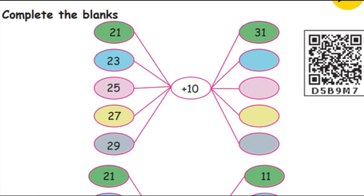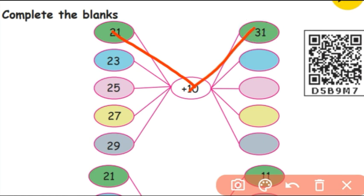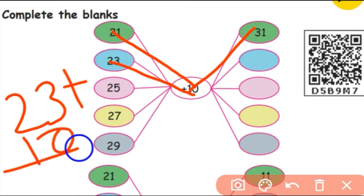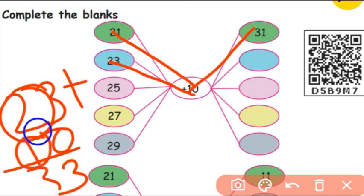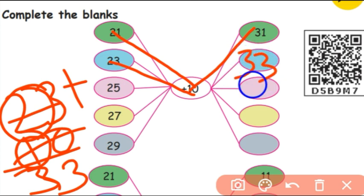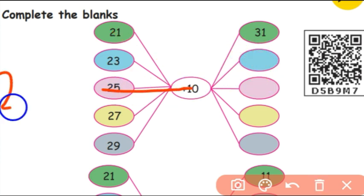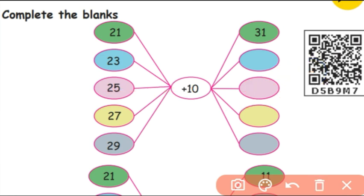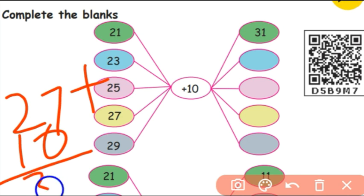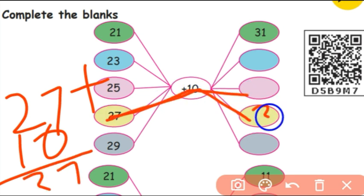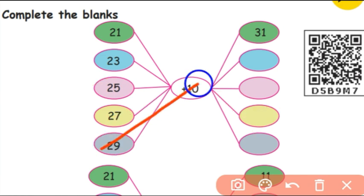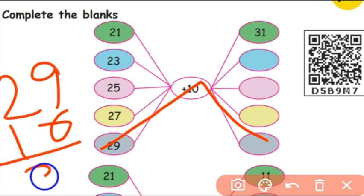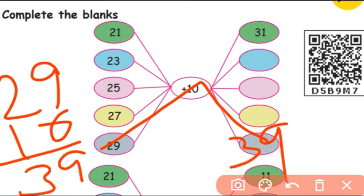Now complete the blanks. 21 plus 10 equals 31. 23 plus 10: the tens digit increases by 1, so the answer is 33. 25 plus 10 equals 35. 27 plus 10 equals 37. 29 plus 10 equals 39.